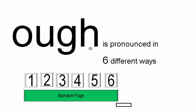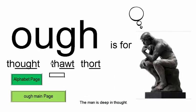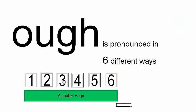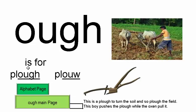O-U-G-H is pronounced in six different ways. The first one is OR, as in THOUGHT — here's a man thinking, having a thought. The second is O, as in DOUGH — here's some dough being made. The third, OW, is for PLOUGH — this is a plough to turn the soil and plough the field.